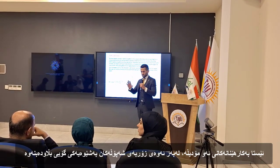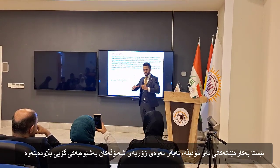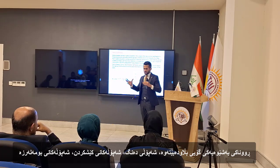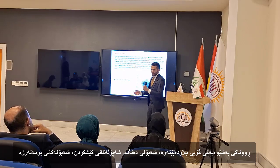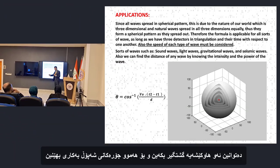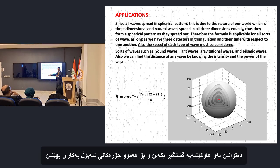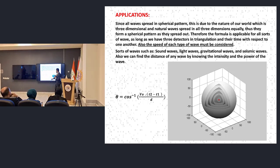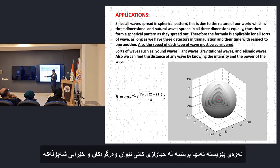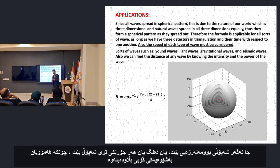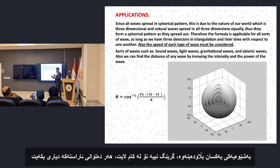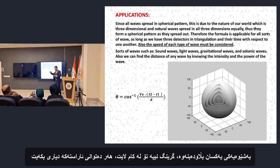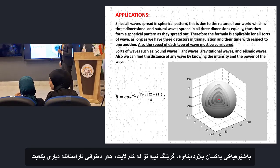Since most waves spread out in a spherical shape — light, sound, gravitational waves, seismic waves, all of them — we can generalize this formula and use it for all sorts of waves. What you need is just the time difference between two detectors and the speed of the wave, whether it's a seismic wave, sound wave, or any type of wave. Since all of them spread out equally in a spherical shape, you'll still be able to determine the direction.